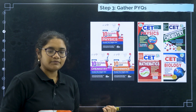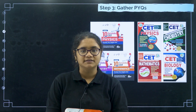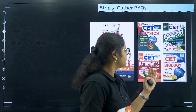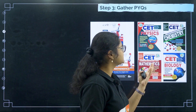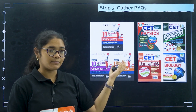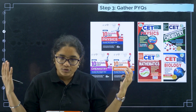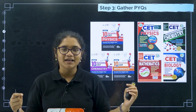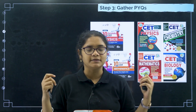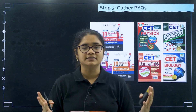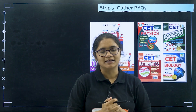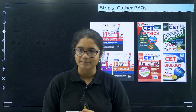Step three is to gather PYQs. You should have previous year questions of KSA. Important publications include Disha, IBA publication, and MTG. Our own channel, Diksha Karnataka, also has previous year questions — you can go to our playlist where we have solved at least 30 questions from all chapters considering the last 10 years. That can be a very good resource as well.